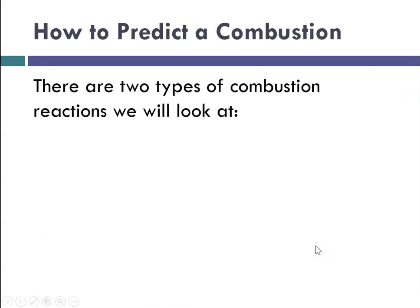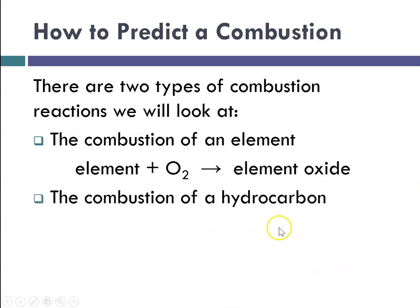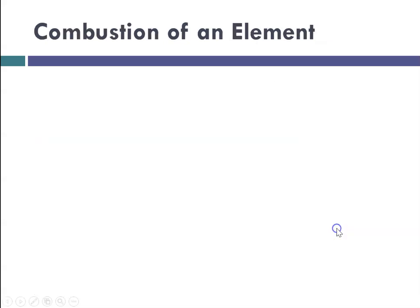So there's two types of combustion that we're going to look at. The combustion of an element, which would be element plus O2, oxygen, yields the element oxide. And the second case, the combustion of a hydrocarbon, where you have some CxHy, where X and Y are your subscripts, plus oxygen. But the product is always CO2 and H2O. You don't have to think about it. Just write CO2 and H2O and balance it.